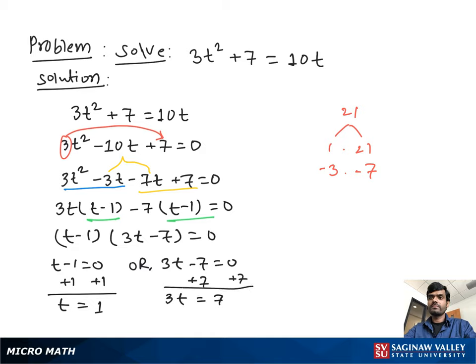Divide both sides by 3, we get t = 7/3. So our final answer is t = 1 or t = 7/3.